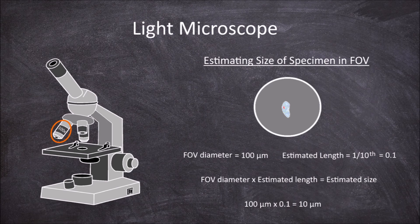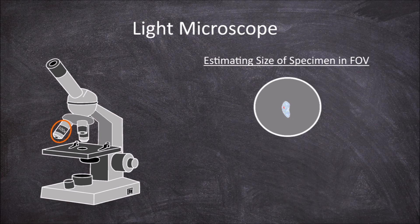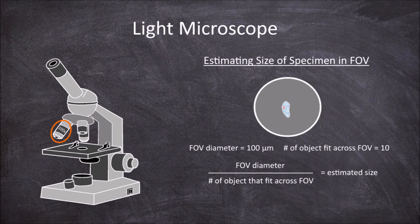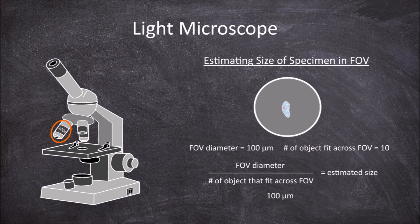Another way to estimate the size of a sample is to count how many times the object would fit across the field of view, and then divide the field of view diameter by this count. If the field of view diameter was still 100 micrometers, and around 10 paramecium would fit across the field of view diameter, then it would be 100 micrometers divided by 10, which gives an estimated size of around 10 micrometers.